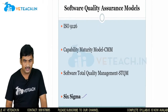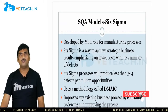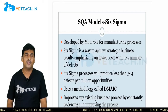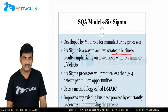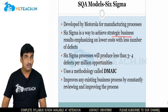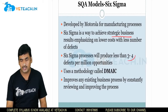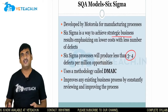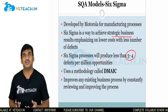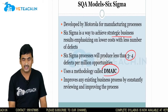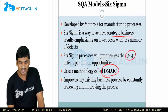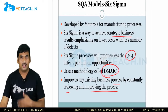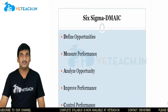Six Sigma was initially developed by Motorola for manufacturing processes and has since been adapted to software development. It is a way to achieve strategic business results by emphasizing lower cost with fewer defects. The specialty of Six Sigma is that it ensures less than 3–4 defects per million opportunities. The methodology used is DMAIC, which constantly reviews and improves the existing business process through continuous revision.